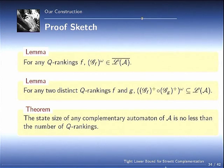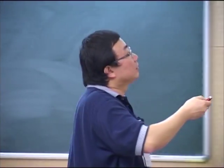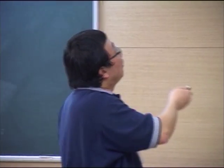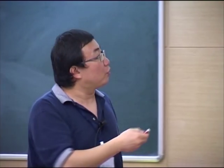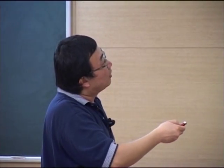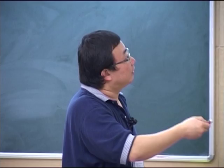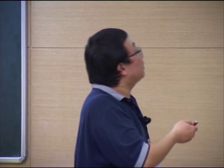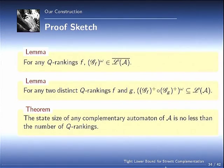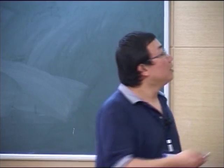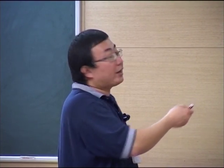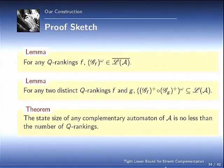Now we have two lemmas and one theorem. Basically, for any Q-ranking F, this guy does not belong to LA. Whereas for any two different Q-rankings F and G, this guy is a subset of LA. Now it's straightforward to get the conclusion that the state set of any complementary automaton of A is no less than the number of Q-rankings. The number of Q-rankings is going to serve as the lower bound of the complementation construction.